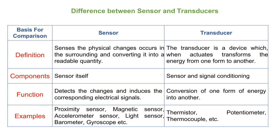Examples of sensors include proximity sensor, magnetic sensor, accelerometer sensor, light sensor, barometer, and gyroscope. Examples of transducers include thermistor, potentiometer, and thermocouple. By example, sensors majorly sense or detect changes in the input and give related changes in a readable form at the output. Whereas transducers take input signals and convert them into output in the form of signals.